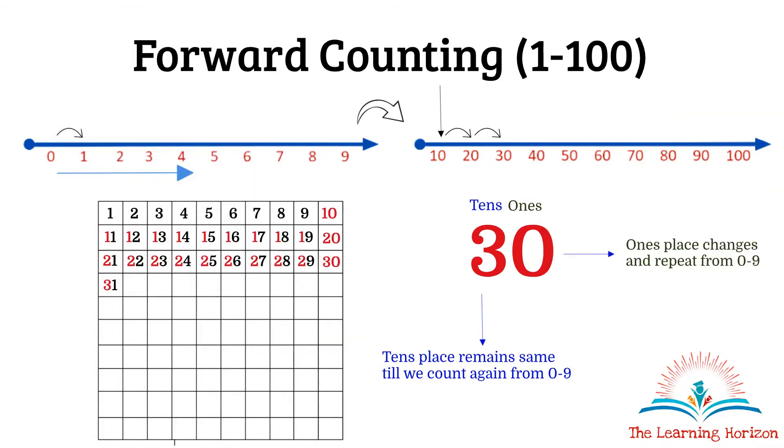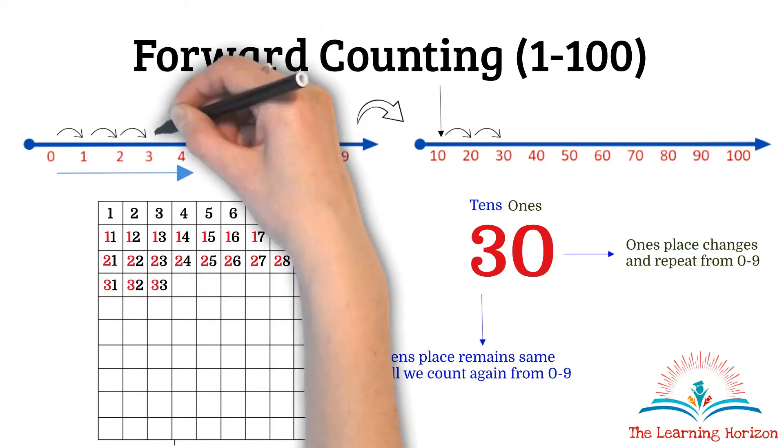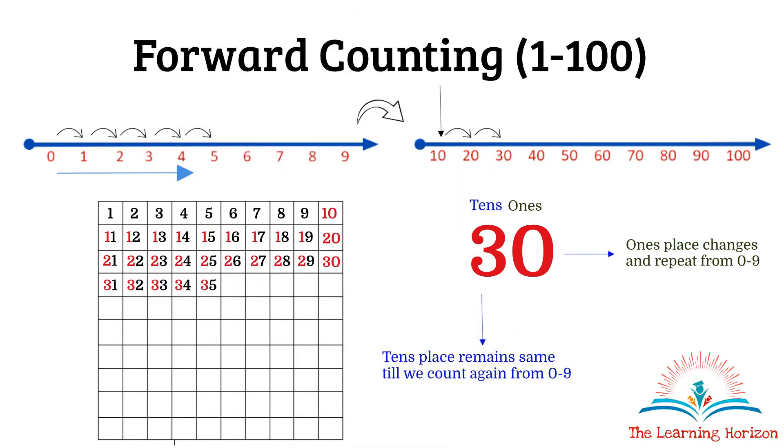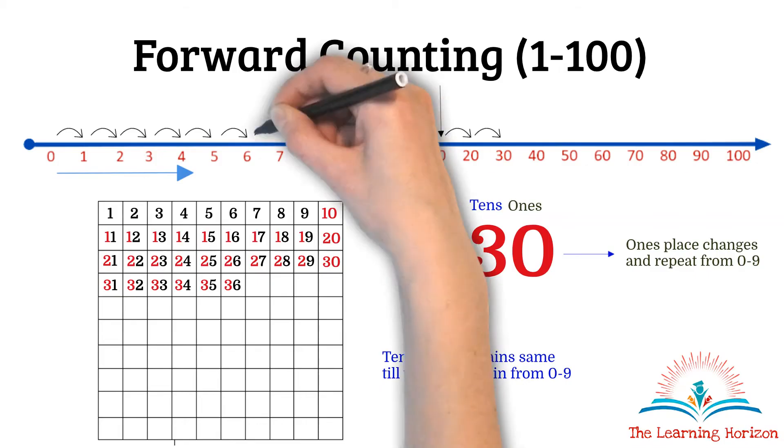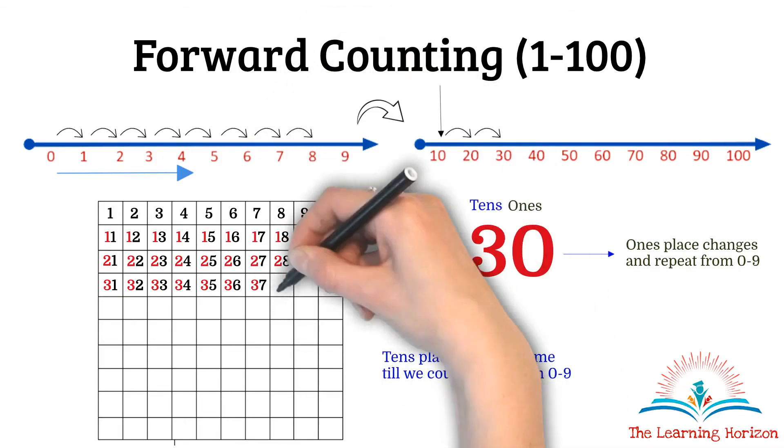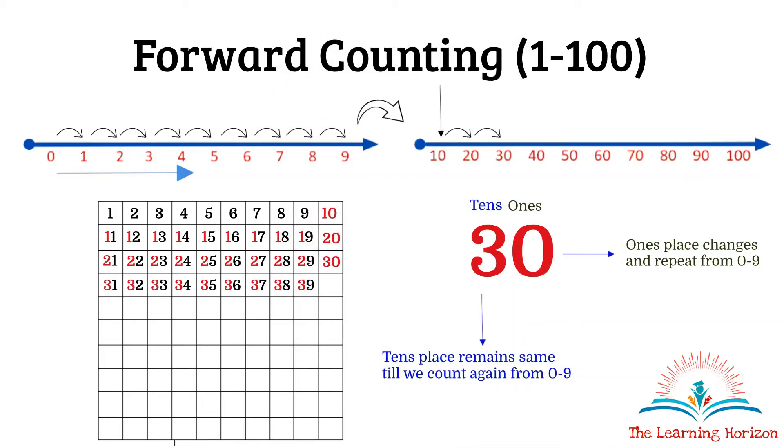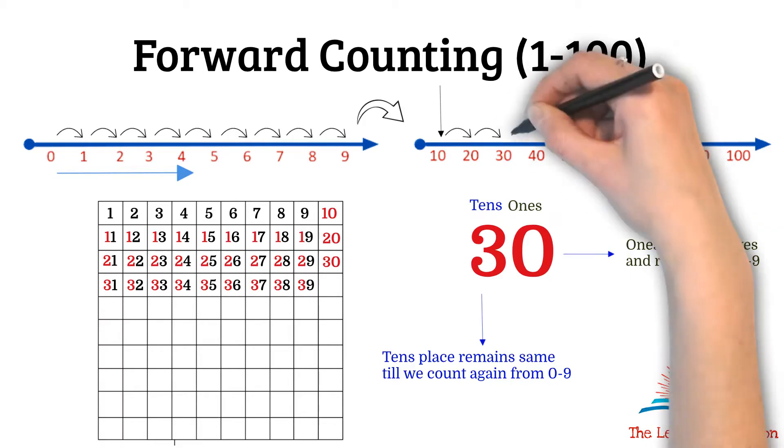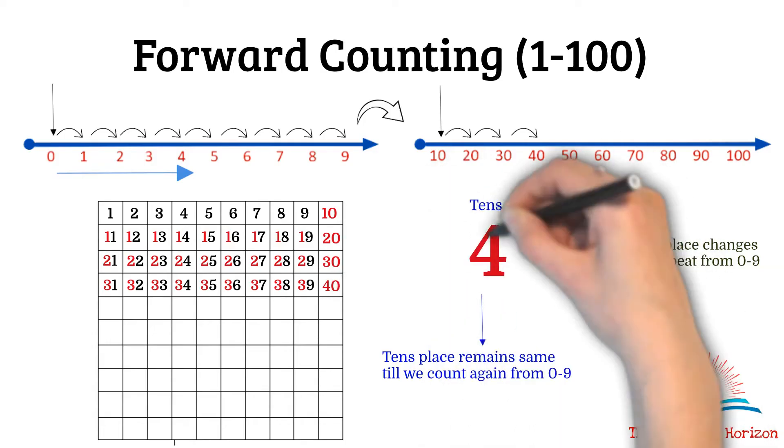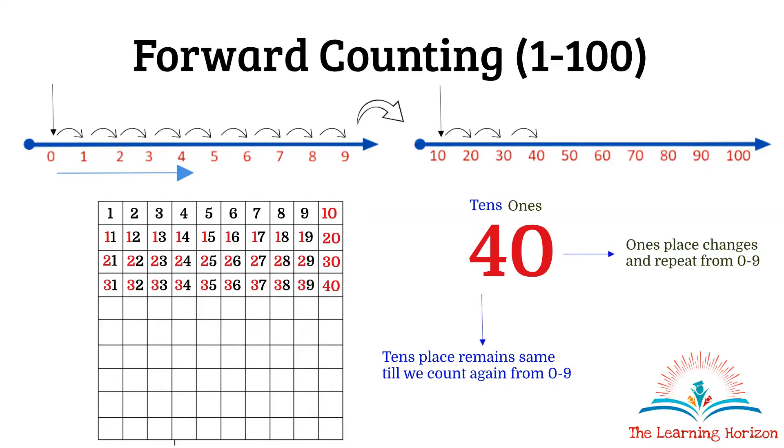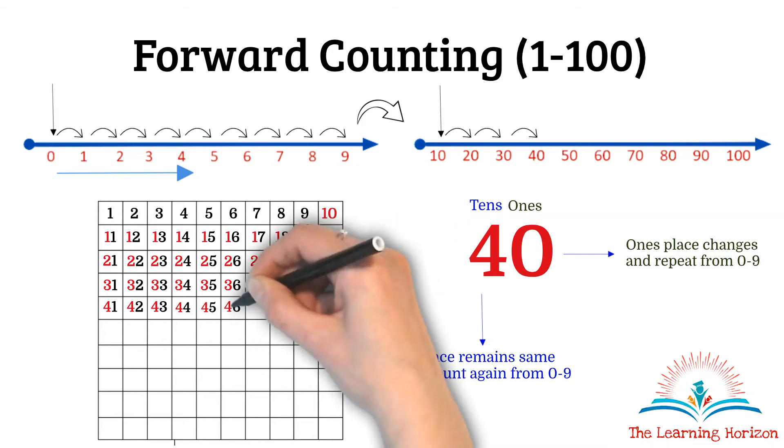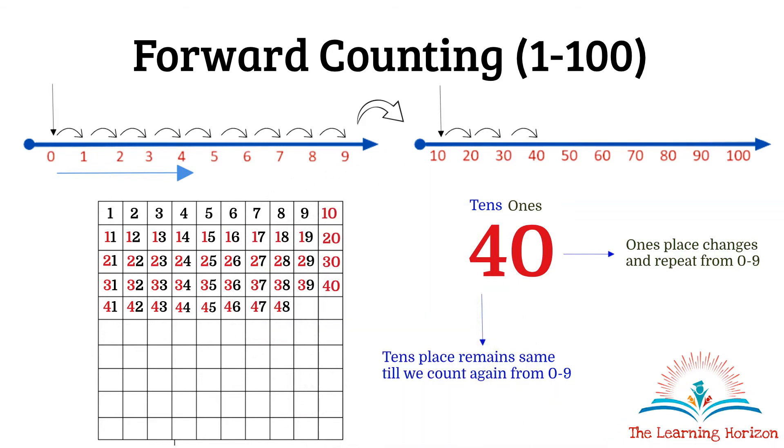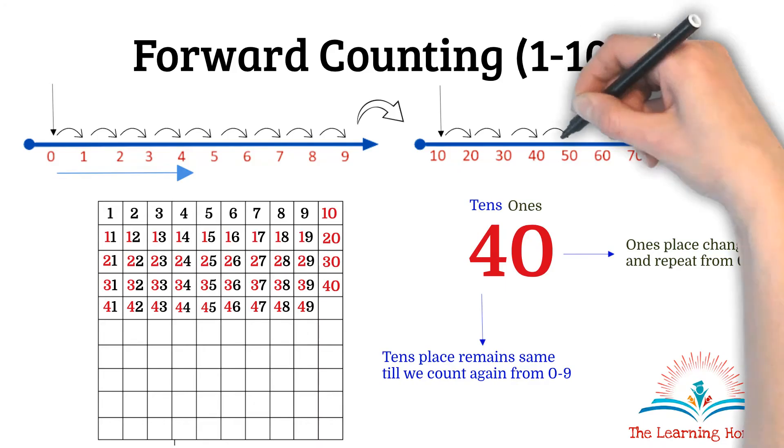31, 32, 33, 34, 35, 36, 37, 38, 39. No more digits. Move on to 40. And repeat the same order again: 41, 42, 43, 44, 45, 46, 47, 48, 49. No more digits. Move on to 50.